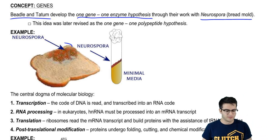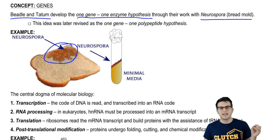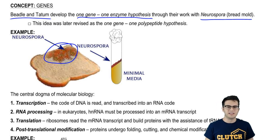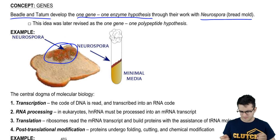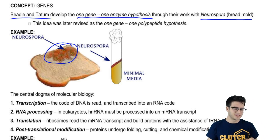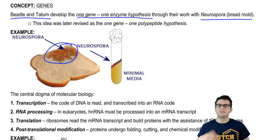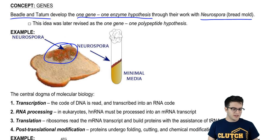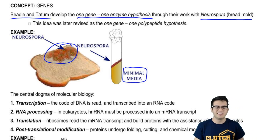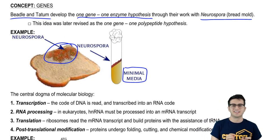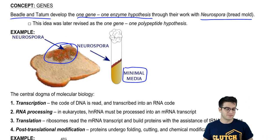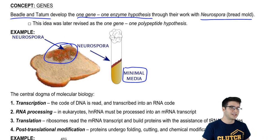Beadle and Tatum took this bread mold and they bombarded it with mutagens — they wanted to mutate these organisms. Then they took their mutants and put them into a variety of environments. Some went into what was called a minimal media, which literally had just the bare necessities needed to survive — just a little glucose and maybe some other essential nutrients that the organism can't produce for itself.